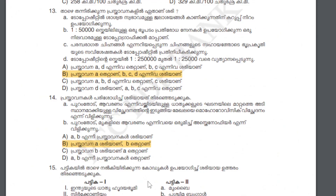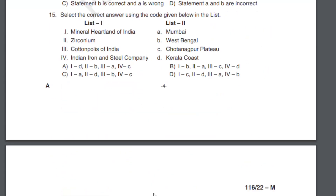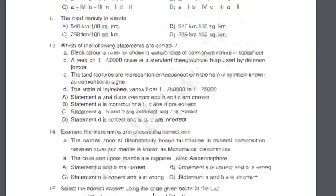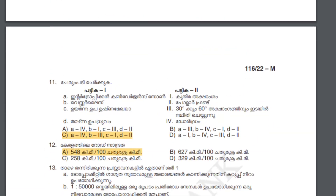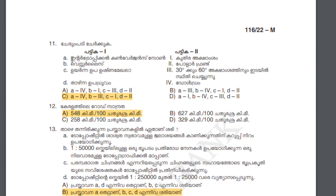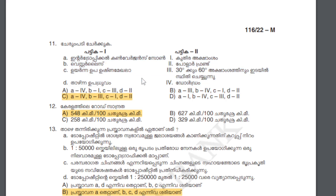In the next question paper, here you can see the geography question. Here you can see the Intertropical Convergence Zone. You can study India's Intertropical Convergence and the Westerlies. This is a section of Indian climate.